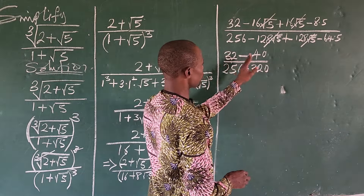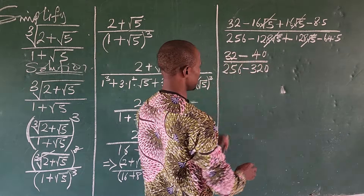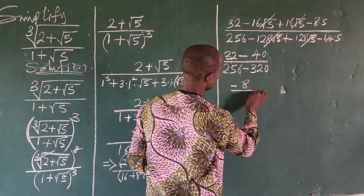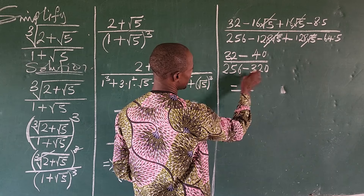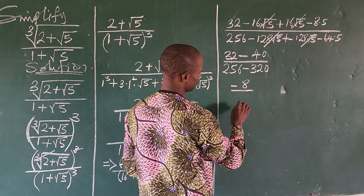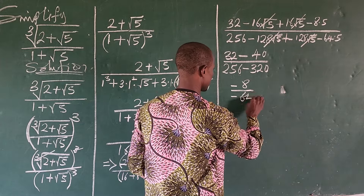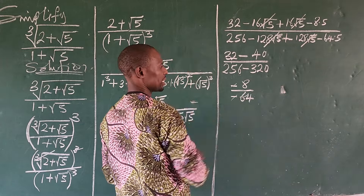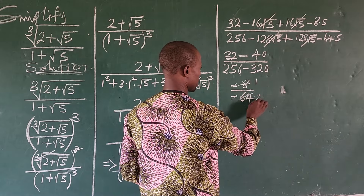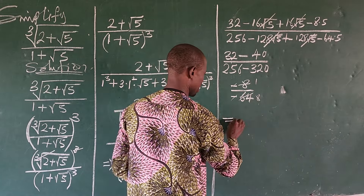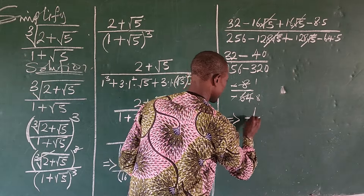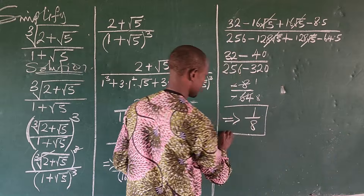So in the numerator, minus 16 root 5 and plus 16 root 5 cancel out, leaving 32 minus 40 which gives us minus 8. In the denominator the root 5 terms cancel, leaving minus 64. So minus 8 over minus 64 simplifies to 1 over 8. Our answer is 1/8.